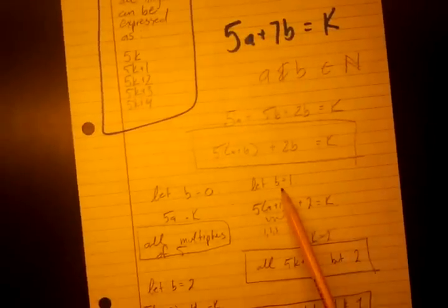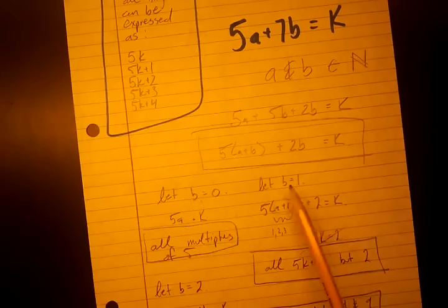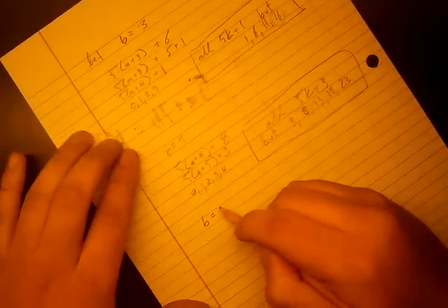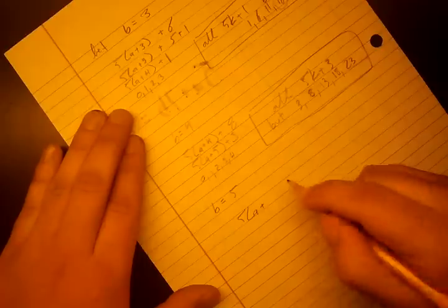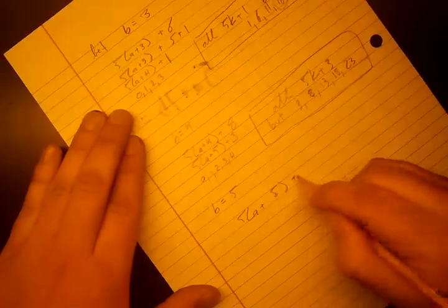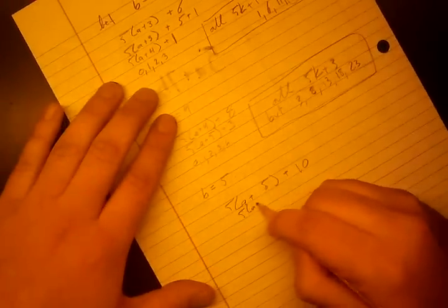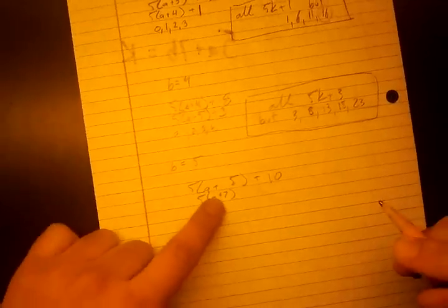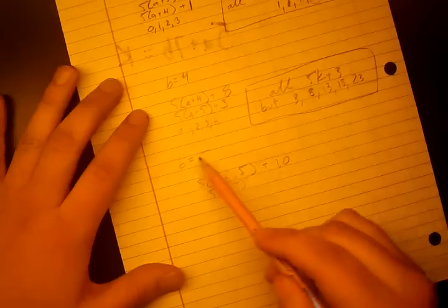And should we do, how many cases have we done? We've done let B = 0, 1, 2, 3, and 4. Let's just do one more. Let's try it. So let's let B = 5. So then we get 5(A+5) + 10. But 10 can just be 5 times 2, so that's 5(A+7). So again, we have a 5K. And since we've already covered the 5Ks, we don't need to do B = 5. And you're going to see that we already did all 5 cases with the remainders.